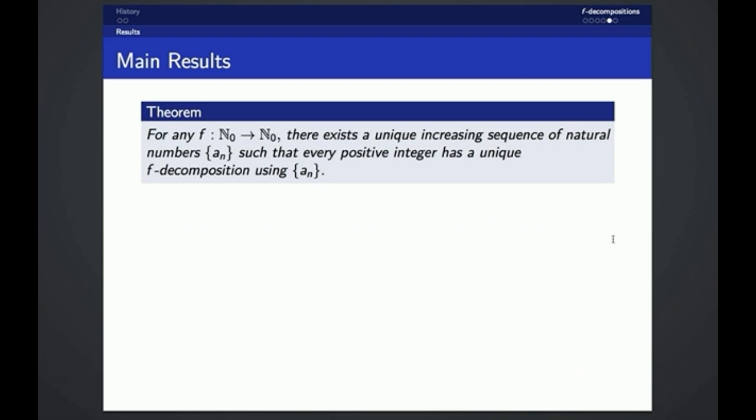The main results of our paper are as follows. First, for any F from the naturals with 0 to the naturals with 0, there exists a unique increasing sequence of natural numbers A sub n such that every positive integer has a unique F decomposition using A sub n. The way we prove this is similar to how we constructed the Fibonacci numbers.